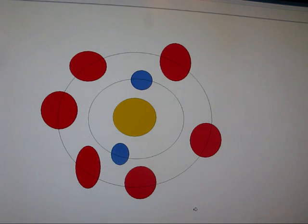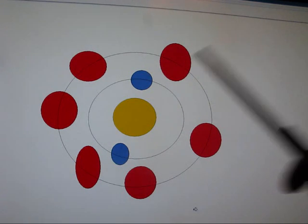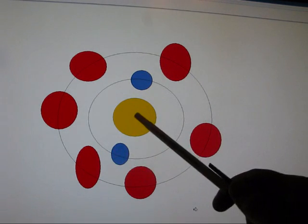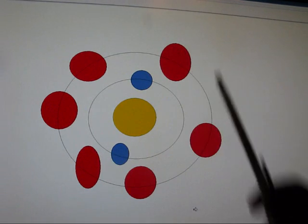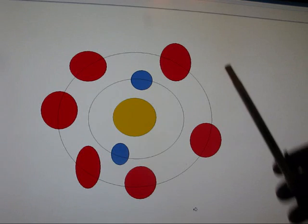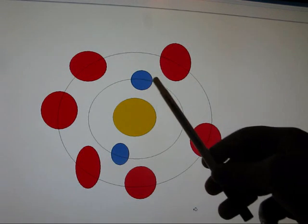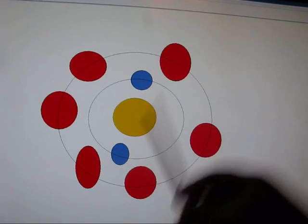An oxygen atom looks a little bit like this. This is a very rough drawing, but you should get the idea. Basically, you've got the nucleus, the two electrons circling the nucleus on the inner circle. You've got the outer circle with six electrons, so the six electrons circling the inner circle with the two electrons and the nucleus.